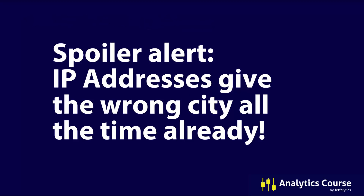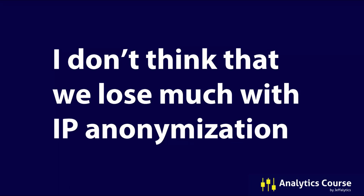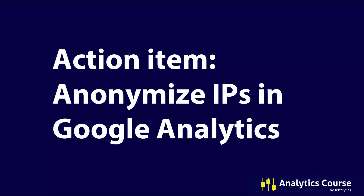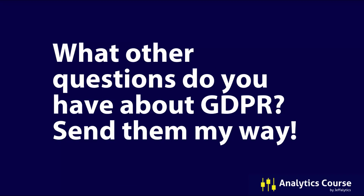Spoiler alert: IP addresses give the wrong city all the time already. Every time I log into my WordPress dashboard, it tells me I logged in from a city over 20 miles away. Google Analytics has a more accurate IP database than most, but you're still going to lose about one third of exact city identifications — and that's a small price to pay for compliance. So anonymize your IPs in Google Analytics. I don't think you lose much, and you have a lot to gain. What other questions do you have about GDPR? Send them my way and I'll answer them in a future video.